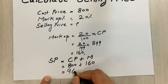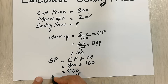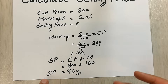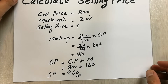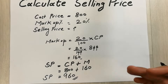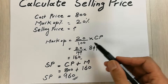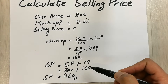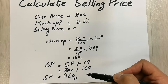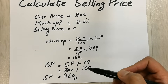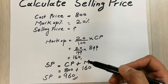So 960 is our selling price. This is how you can calculate the selling price in two steps: first, find the markup amount; then apply the formula and plug in the values to get the answer. I will show you one more example.